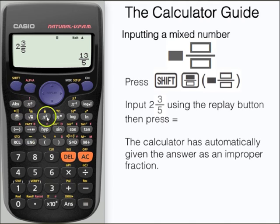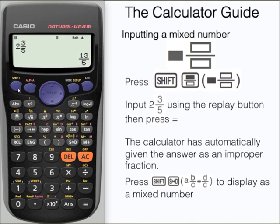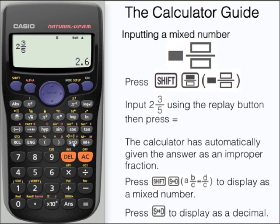To display this as a mixed number we need to use that function again, so shift and SD. And here we have 2 and 3 fifths. Remember we can press the SD button as well to display it as a decimal: 2.6.